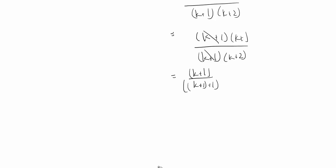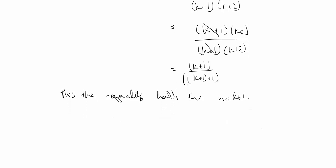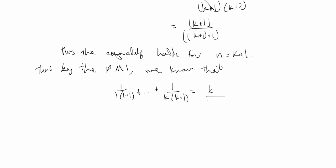So we've basically proved the whole problem. Thus, the equality holds for n equals k+1. By the principle of mathematical induction, we know that the sum of 1 over n(n+1) equals n over (n+1) holds true for all n in the natural numbers.